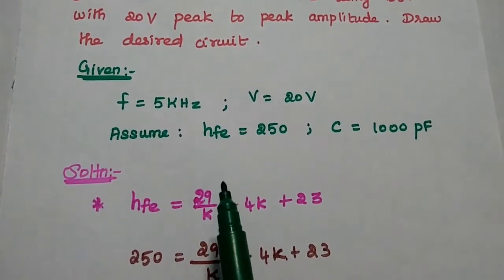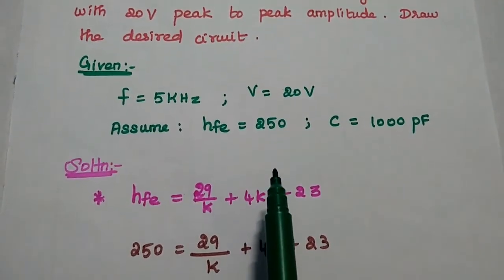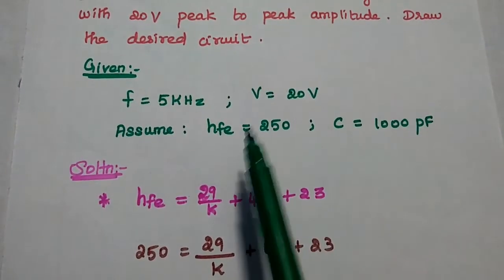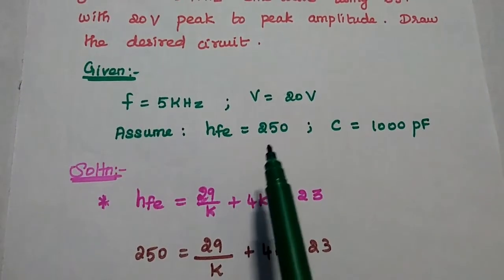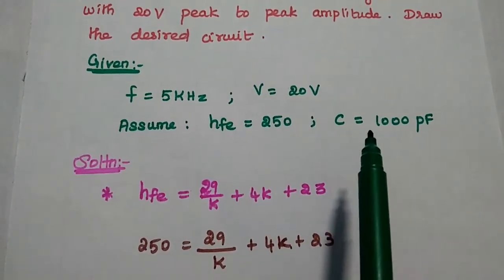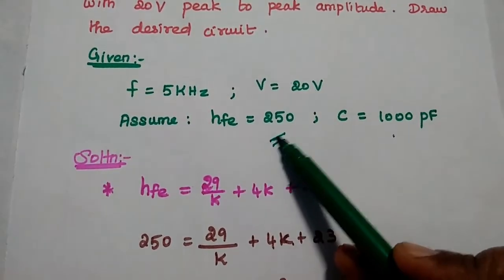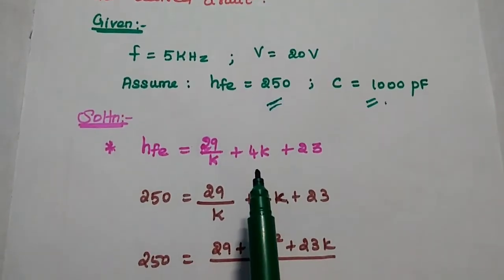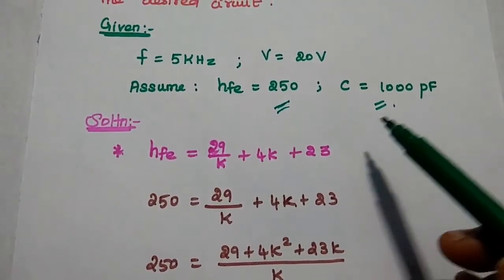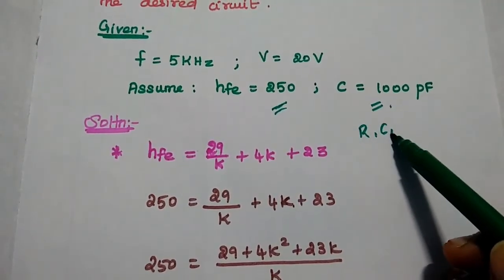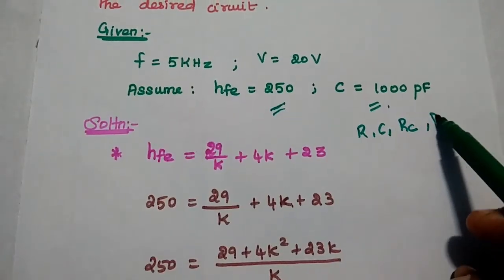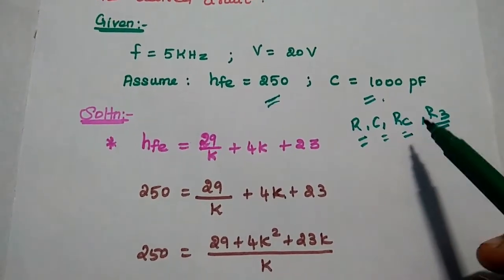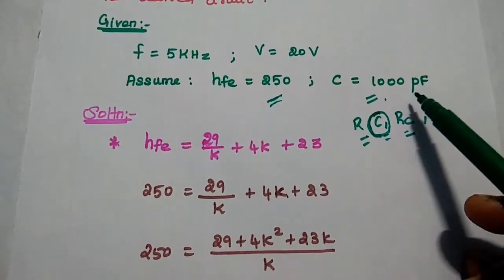We need some additional parameters to design the RC phase shift oscillator. We can assume the HFE value as 250 — if it is not given in the problem, simply assume 250. The capacitor value is assumed as 1000 picofarad. We need to find R, RC, and the third capacitor value in the feedback network. The capacitor C is already assumed as 1000 picofarad.